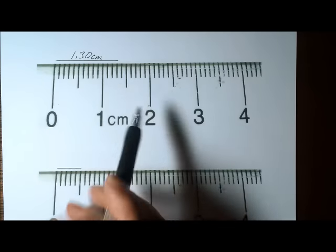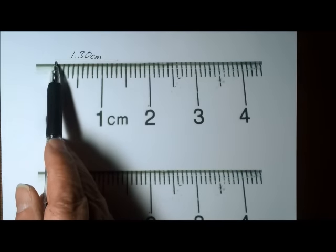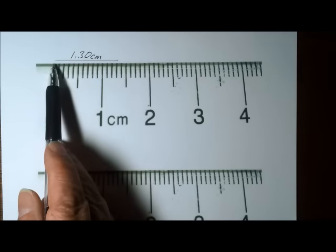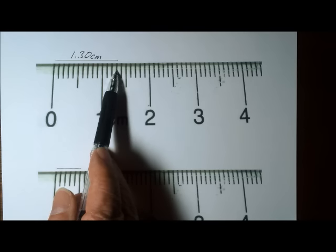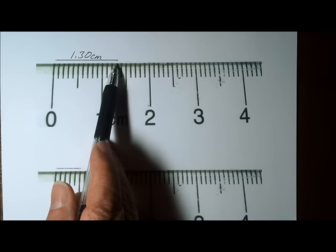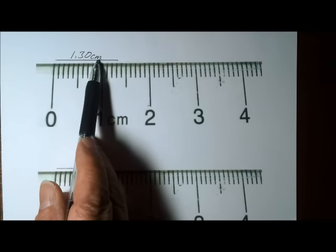Here's a simple example. On this centimeter scale, this particular line has a length of 1.30 centimeters. So this is 1.30 centimeters long.